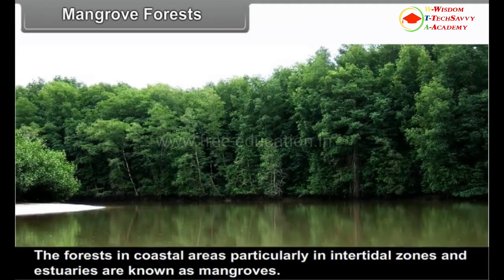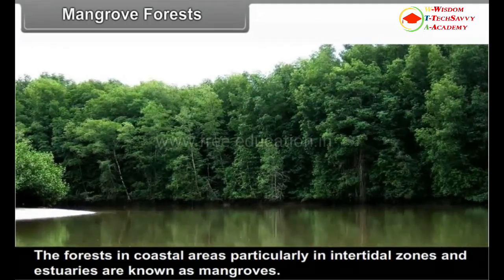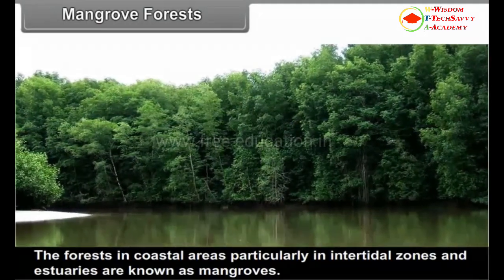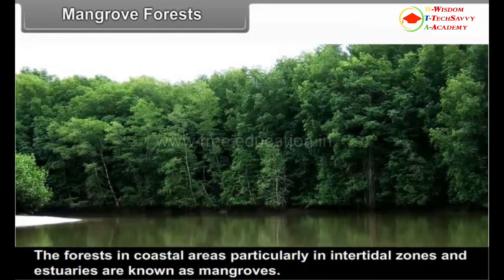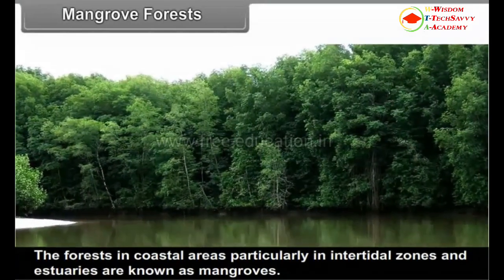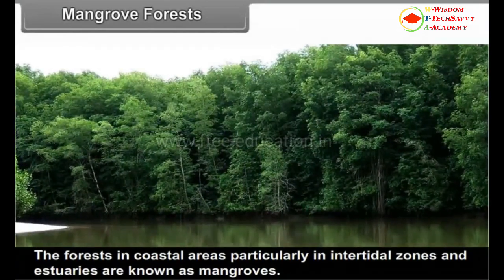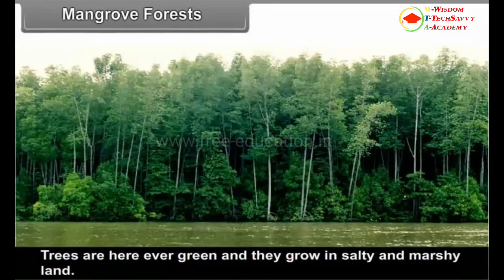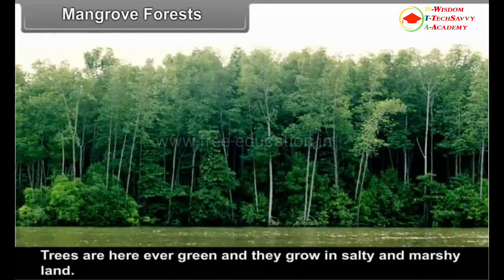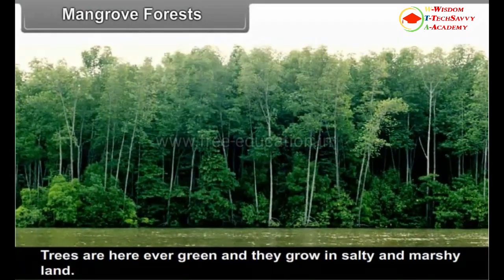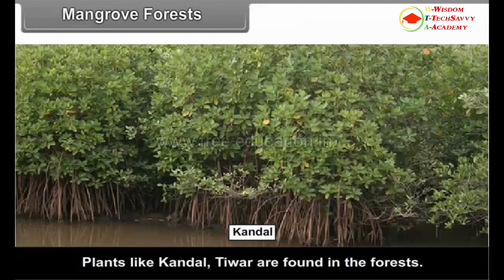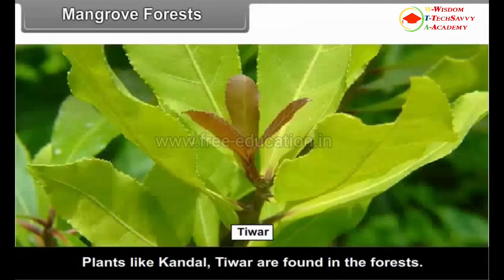Mangrove Forests. The forests in coastal areas, particularly in intertidal zones and estuaries, are known as mangroves. Trees here are evergreen and they grow in salty and marshy land. Plants like Kandel and Tiwar are found in these forests.